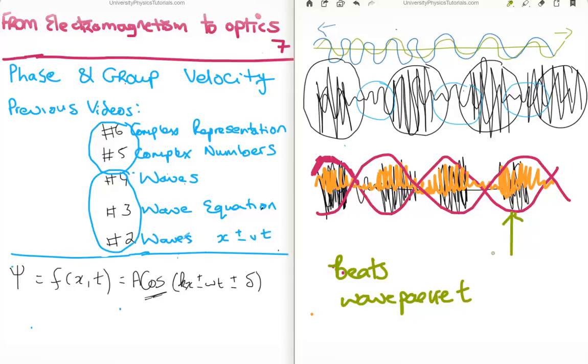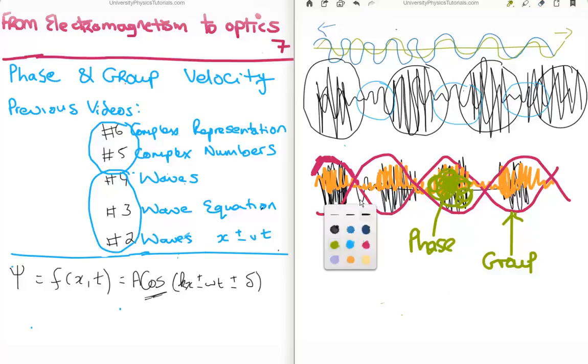So the envelope travels at what's known as the group velocity and the inside travels at what's known as the phase velocity. So we know the formulas: we know the formula for the phase velocity already, it's omega over k, and I'm going to tell you the group velocity is d omega dk. It's the rate of change of the omega with respect to k.